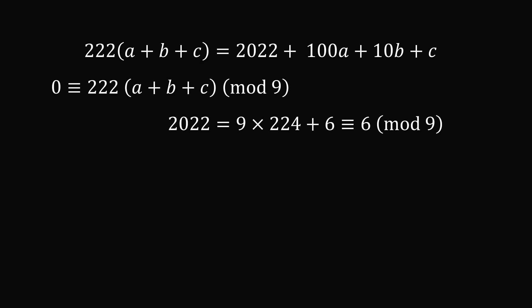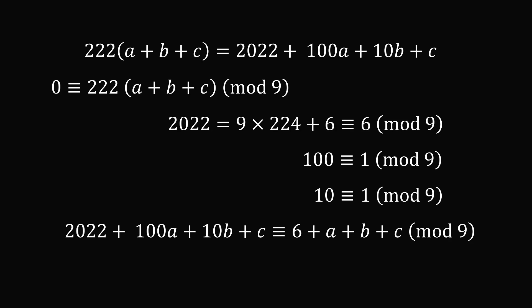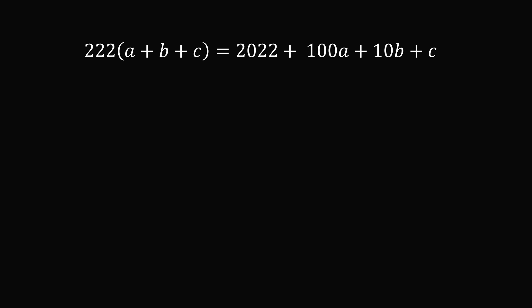2022 will be 6 more than a multiple of 9, so it is equal to 6 mod 9. 100 is of course one more than a multiple of 9, because it's 1 plus 99. 10 is also one more than a multiple of 9. So the entire right hand side of the equation will be equivalent to 6 plus A plus B plus C mod 9. So let's put these facts together. The left hand side of the equation is 0 mod 9, and the right hand side of the equation is 6 plus A plus B plus C mod 9. So 0 is equal to 6 plus A plus B plus C mod 9.